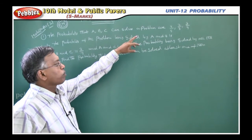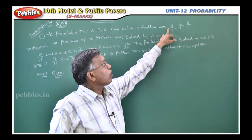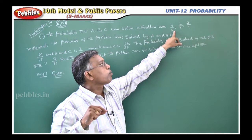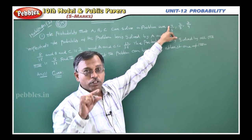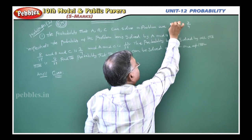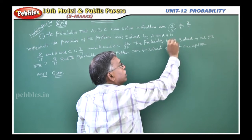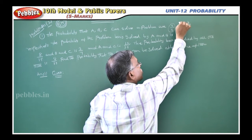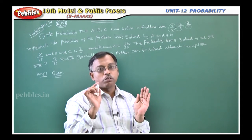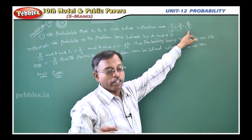The probability that A, B, C can solve a problem are 4 by 5, 2 by 3, 3 by 7. Probability is N of A by N of S — the ratio of the number of favorable events to the number of sample points. So A can solve the problem with 4 by 5, meaning out of 5 chances, 4 are favorable. B: out of 3 chances, 2 are favorable. C: 3 chances are favorable. So probability of A is 4 by 5, probability of B is 2 by 3, probability of C is 3 by 4.